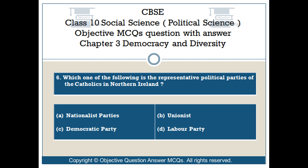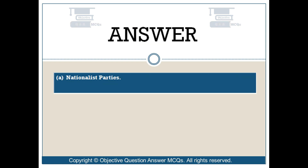Question number 6. Which one of the following is the representative political party of the Catholics in Northern Ireland? Option A: Nationalist parties. Option B: Unionist. Option C: Democratic party. Option D: Labour party. The right answer is Option A — Nationalist parties.